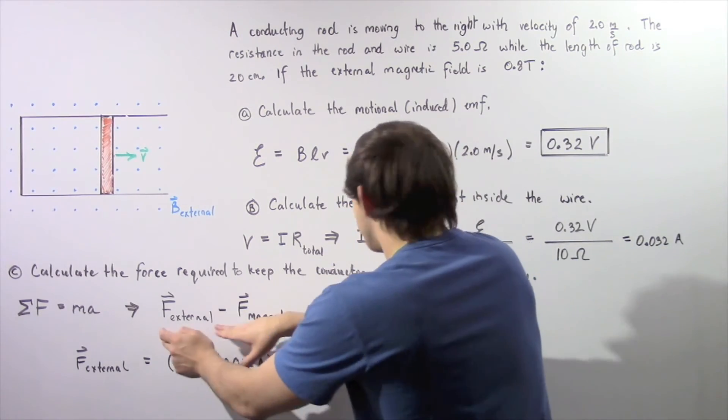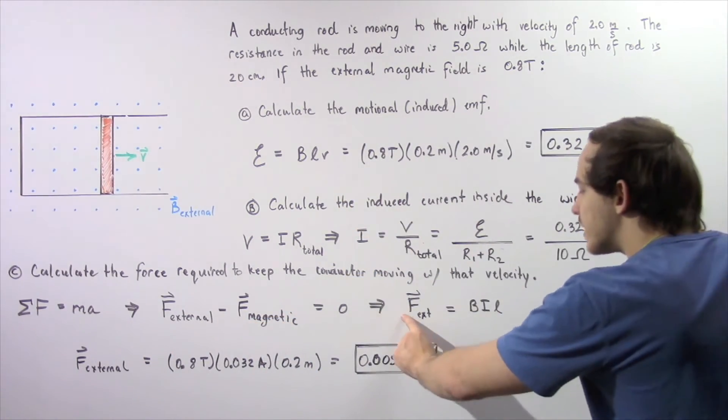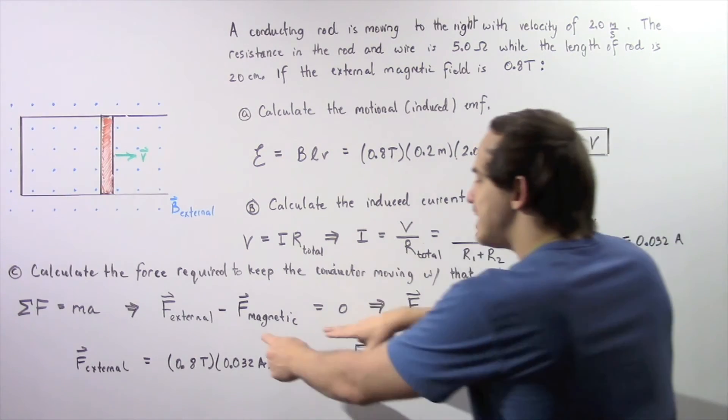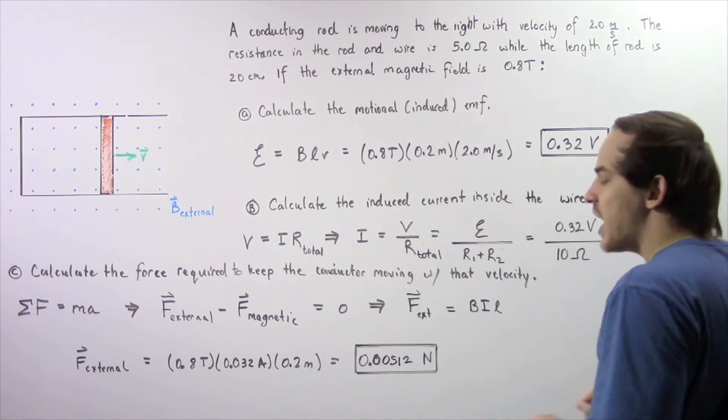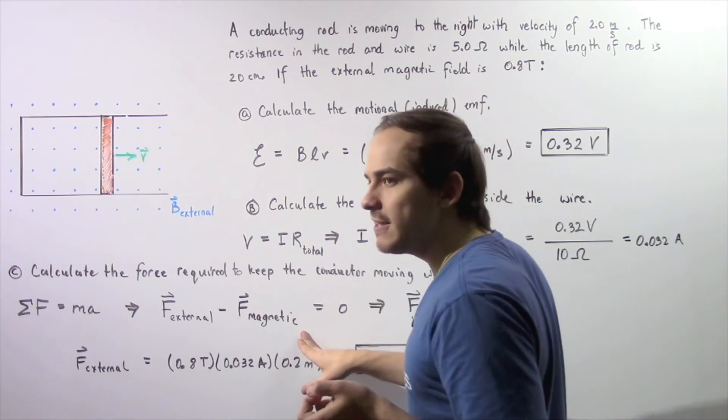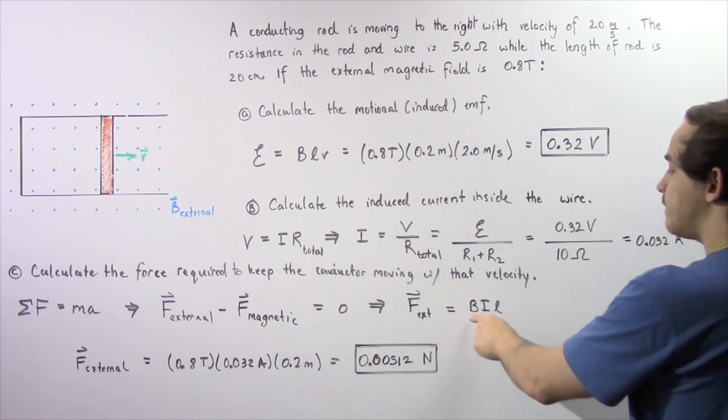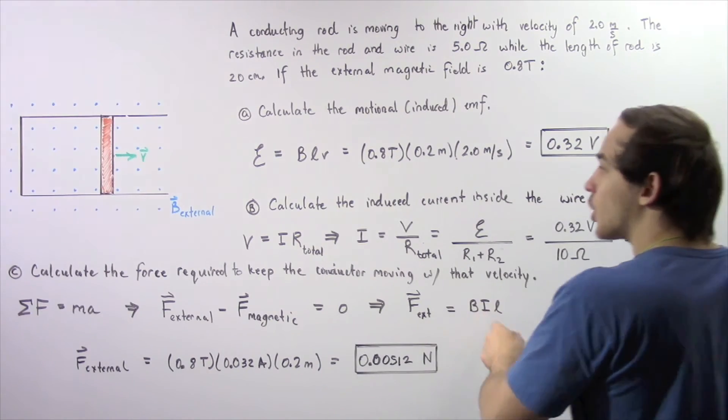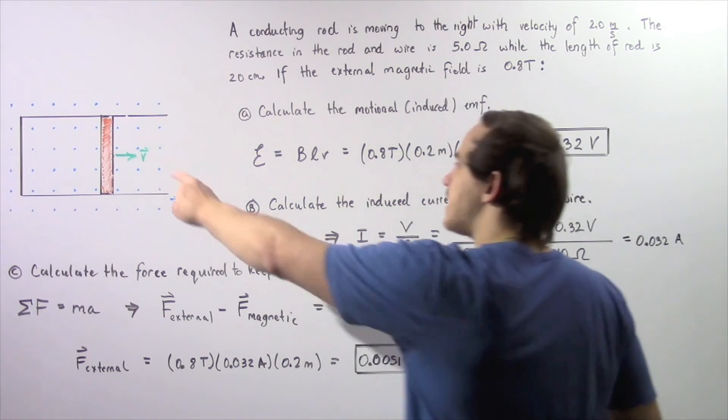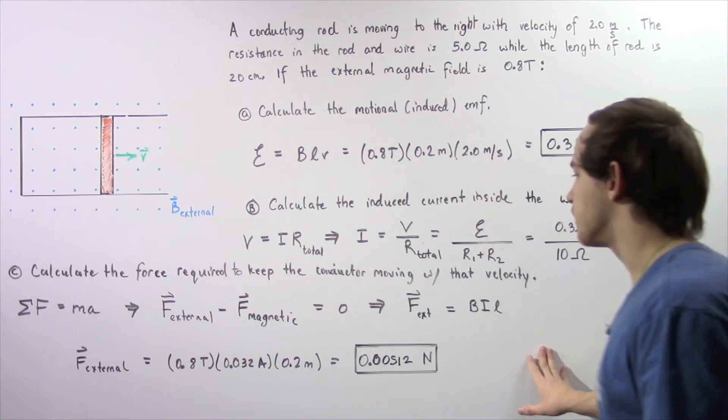So force external minus force magnetic equals 0. We equate these two forces, and we see that our external force equals our magnetic force, and the magnetic force is given by the product of the magnitude of our magnetic field B, our electric current I, and our length of the conductor.